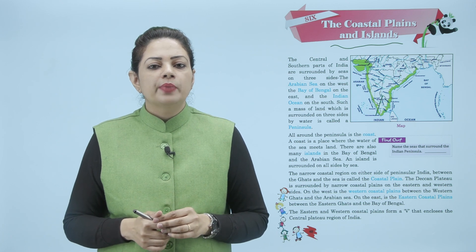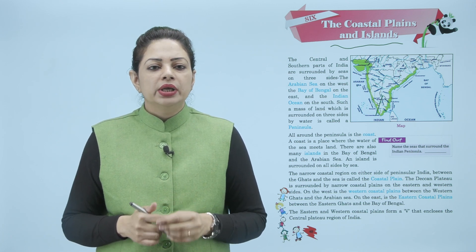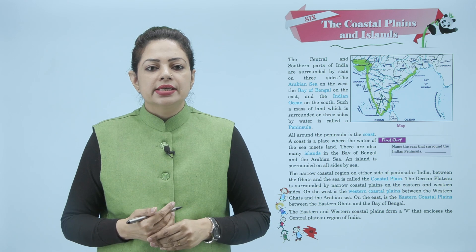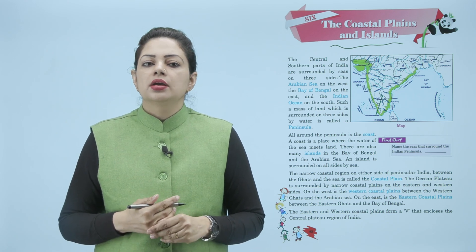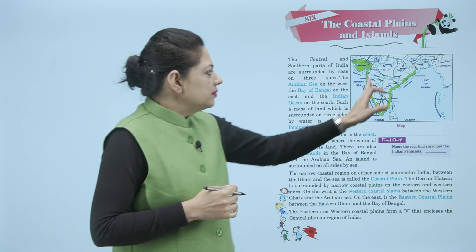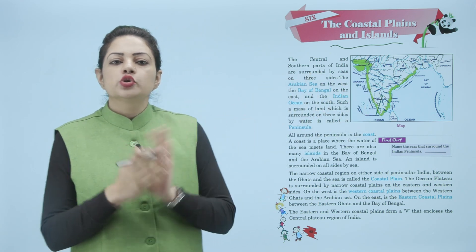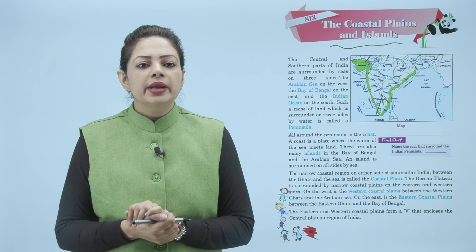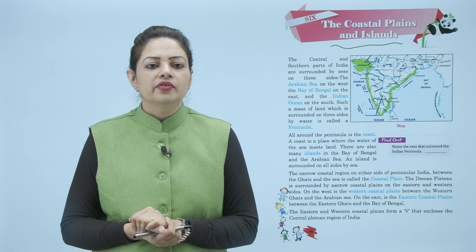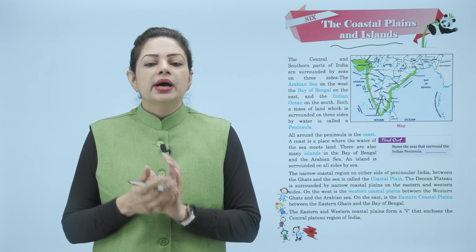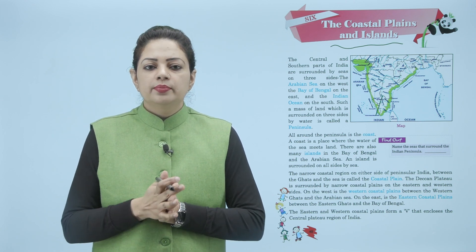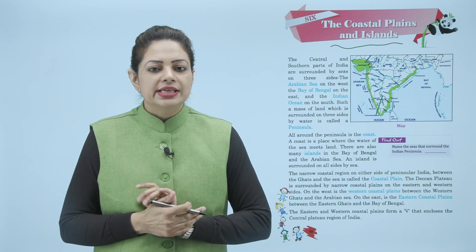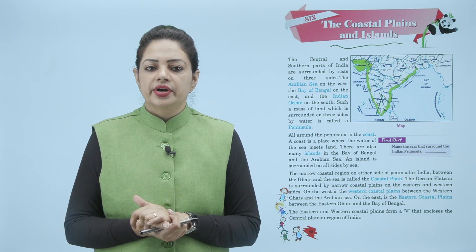The narrow coastal region on either side of peninsular India between the ghats and the sea is called the coastal plains. Inke beech ka jo part hai, usko naam diya gaya hai coastal plain ka. The Deccan plateau is surrounded by narrow coastal plain on the eastern and the western sides. Deccan plateau jo hai, wo narrow coastal plain on the eastern and western side se covered hai.